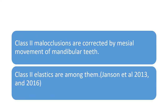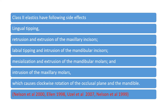Class II malocclusions are often corrected through mesialization of the mandibular teeth, and one mechanism is the use of Class II elastics. However, Class II elastics are not without side effects. These include lingual tipping of the maxillary incisors, retrusion and extrusion of the maxillary incisors, labial tipping and intrusion of the mandibular incisors, mesialization and extrusion of the mandibular molars, intrusion of the maxillary molars, and clockwise rotation of the occlusal plane and mandible.